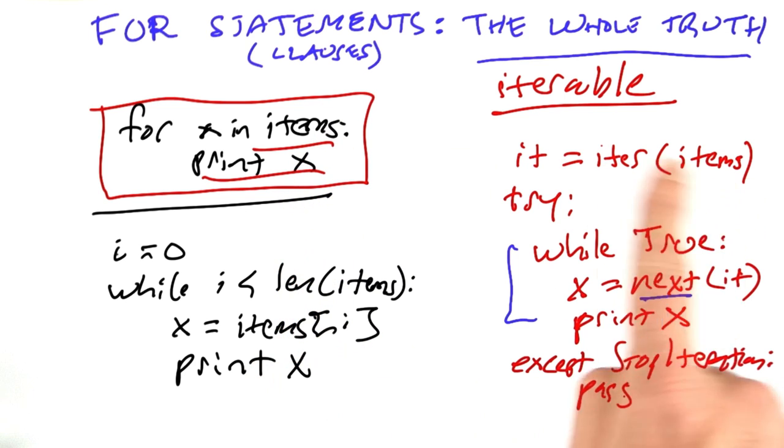We take the items, we create an iterator over them, we call that iterator until we're done, and then we pass through to the next statement.